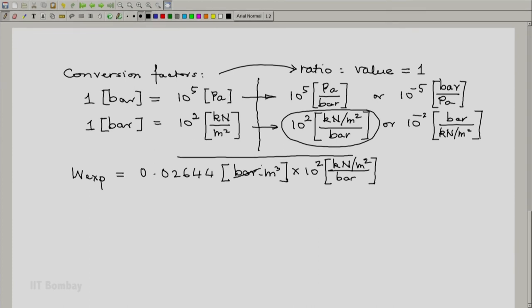Consider bar meter cube and bar, kilo Newton, and meter square as algebraic symbols. Cancel out bar and bar. The meter square gets rid of the meter cube and converts it to meter. So we end up with 10² × 0.02644 = 2.644 kilo Newton meter.